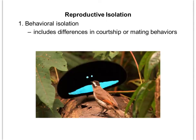The first type of reproductive isolation is called behavioral isolation. This is whenever members of a population start to no longer recognize each other's mating behaviors, which can start the process of speciation. This happens a lot with birds — birds have lots of different courtship behaviors. For example, the Bird of Paradise from the Planet Earth documentary actually jumps around and dances to try to impress the female.